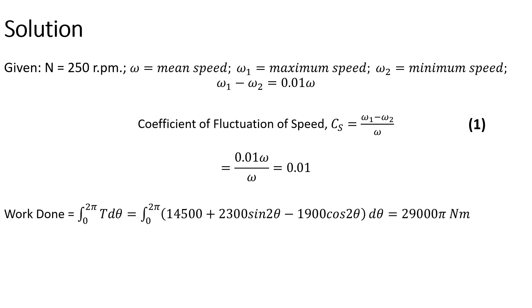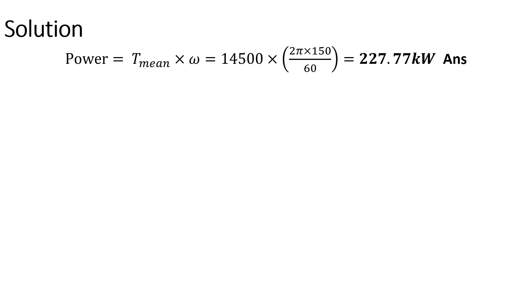Work done is given by the integral of the torque from 0 to 2 pi. When you plug in the values, we get the work done equal to 29,000 pi newton meter. But work done is also equal to T min times theta. From there, we can get the value of T min, which equals 14,500 newton meter. Therefore, power can be calculated as T min times omega. When we plug in the values, we get 227.77 kilowatts, and that is our answer.